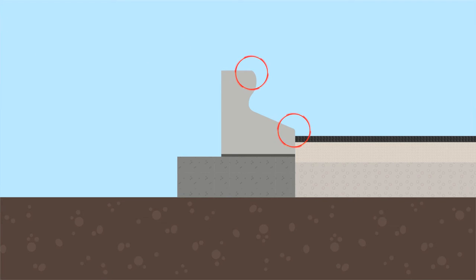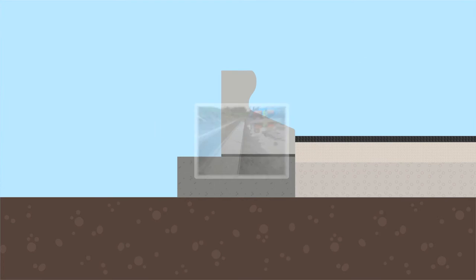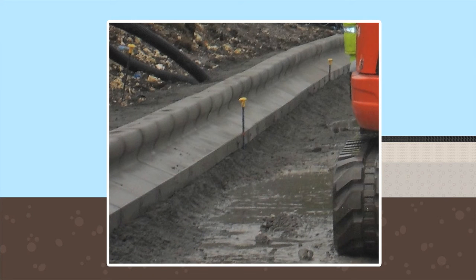An engineer or surveyor will have set out the kerb alignment. The kerb line is set out with marker pins and string lines. It is preferable to set the string line for horizontal and vertical alignment using the face of the kerb as a datum point.